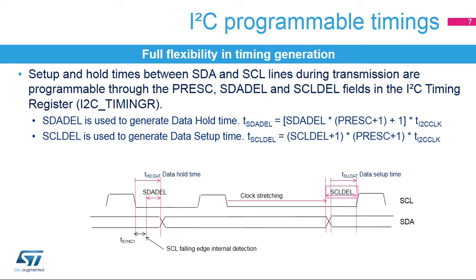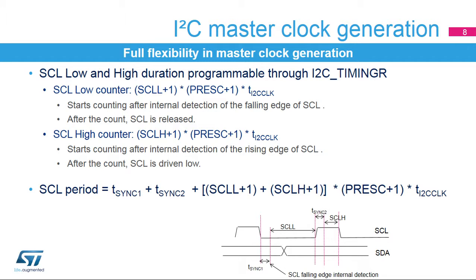This is due to the fact that the SDA-DEL delay is only added once the SCL falling edge is internally detected. The time T-SYNC-1 needed for this internal detection depends on the SCL falling edge, the input delay due to the filters, and the delay due to the internal SCL synchronization with the I2C clock. However, the setup time is not impacted by these internal delays. The I2C master clock's low- and high-level durations are configured by software in the I2C timings register.